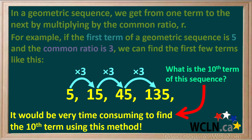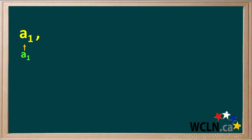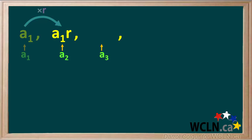Luckily, we can use a formula to find any term we need. We'll call the first term of a geometric sequence a1. In order to get to the second term, a2, we multiply term 1 by the common ratio r. So the second term, a2, is a1 times r, or a1r. To get the third term, a3, we multiply term 2 by r. a1r times r is equal to a1r squared.